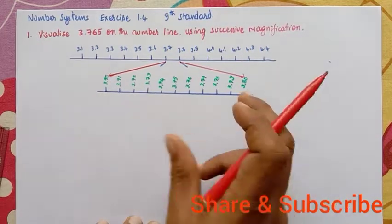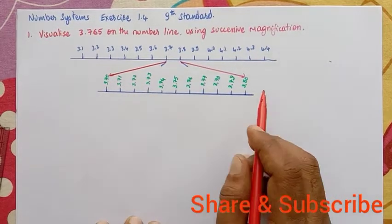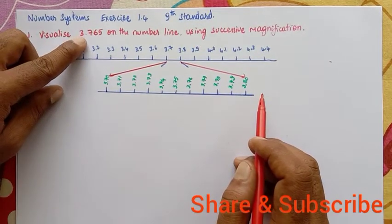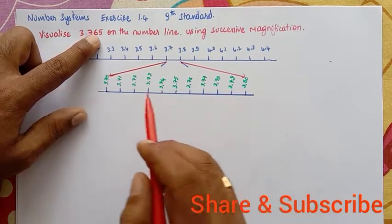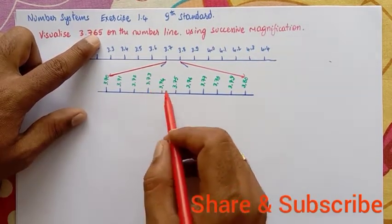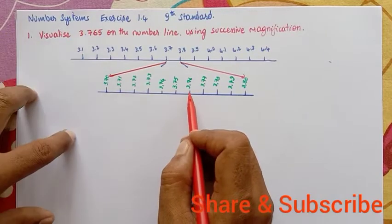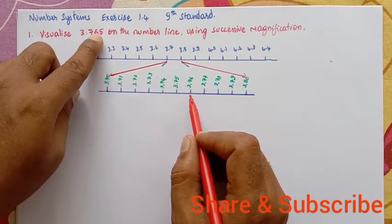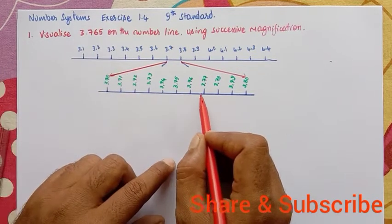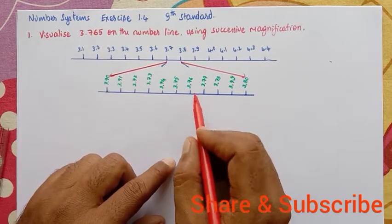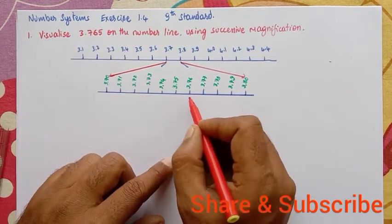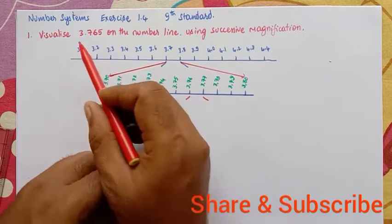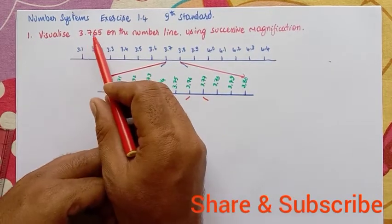What we want to find here is 3.76. Where is it? 3.76 is here — it is at this position. And 3.765 lies between 3.76 and 3.77, in between these two points. So what we have to do is magnify this part to find 3.765.